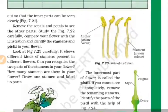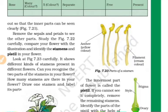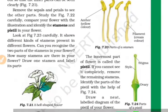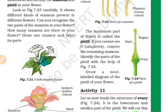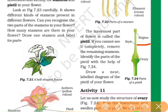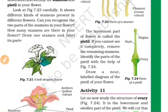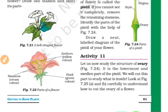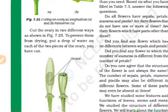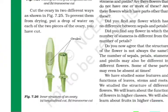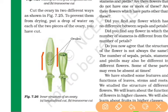We look at the stamen. The stamen has an anther — the anther contains pollen. Next is the filament. Then we look at the innermost part, the pistil. The pistil has a stigma at the top, a style, and an ovary. We then cut the flower in transverse and longitudinal sections to observe the bell-like structure and the oval shape inside.